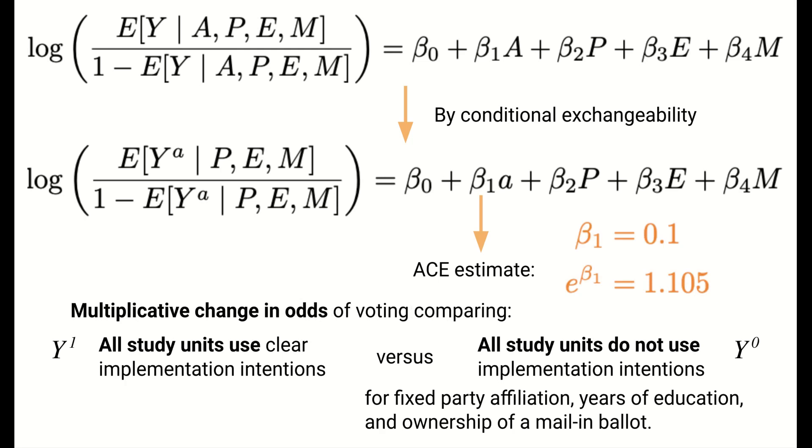Our interpretation of beta 1 was on the log scale. To have a more interpretable causal effect, we can exponentiate the beta 1 coefficient to move the effect from the log scale to the natural scale. For example, if this coefficient were estimated to be 0.1, then the exponentiated coefficient, 1.105, indicates that if all study units used clear implementation intentions, the odds of voting would be multiplied by 1.105, as compared to all study units not using implementation intentions. Again, this multiplicative change is while fixing party affiliation, years of education, and ownership of a mail-in ballot.